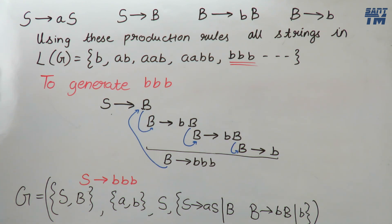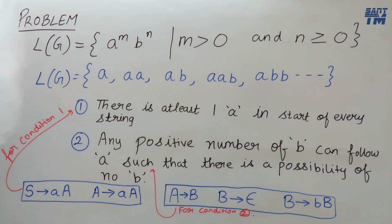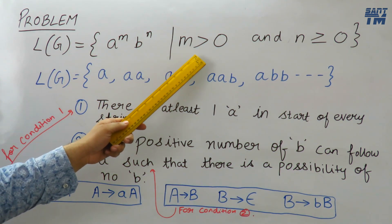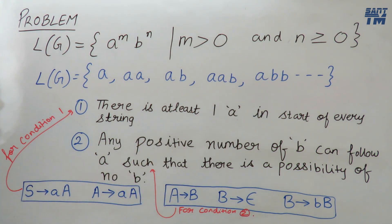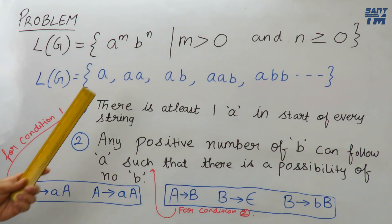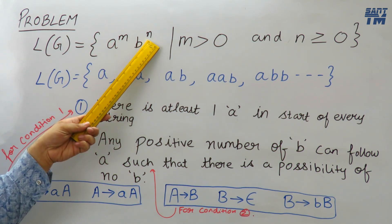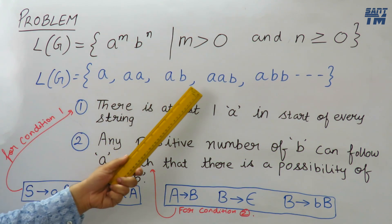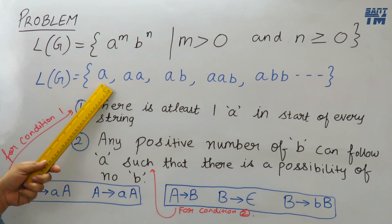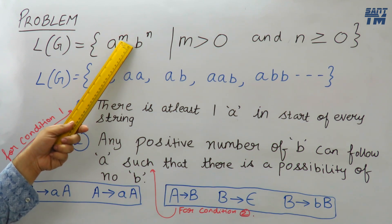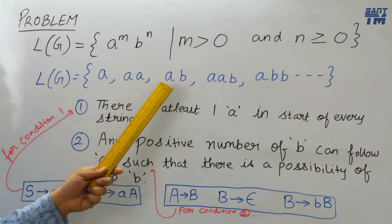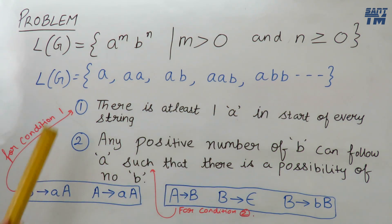Now we will take one more example. Another problem is to generate grammar for the language LG = a^m b^n where m is greater than 0 and n is greater than or equal to 0. This is just opposite to our last example. Here m must always be greater than 0 but n can be 0 also. So the strings will include: a, aa, aaa, ab, aab, aaab — where a is compulsory because m cannot be 0.